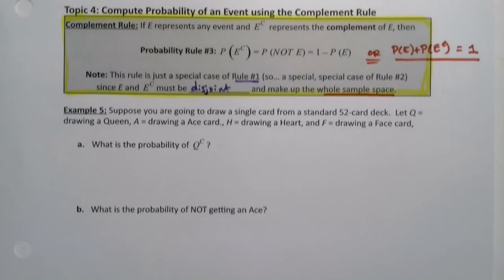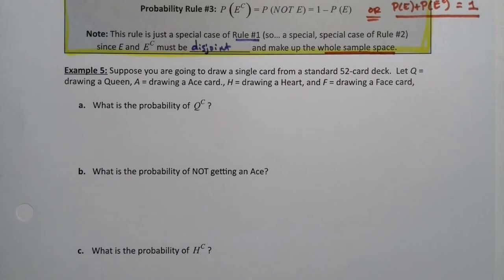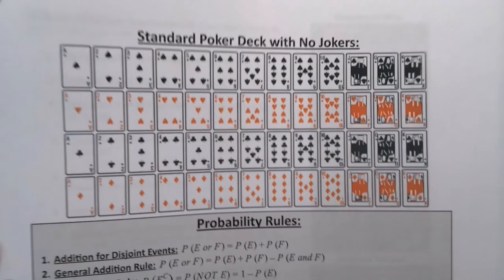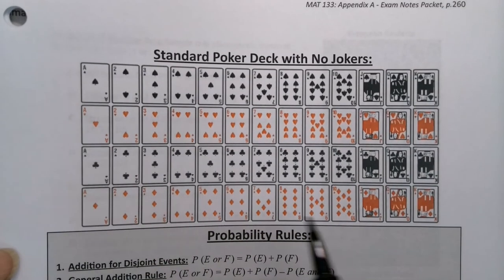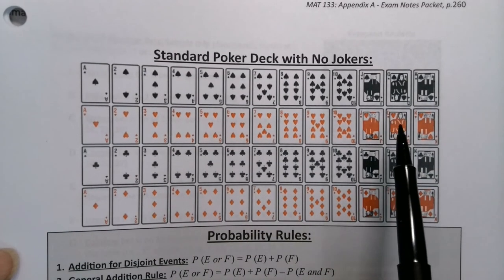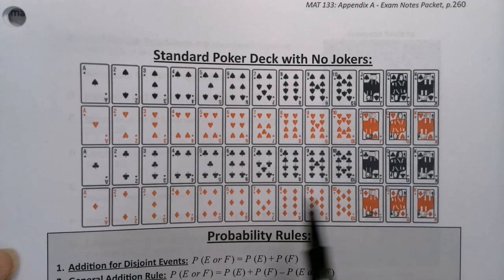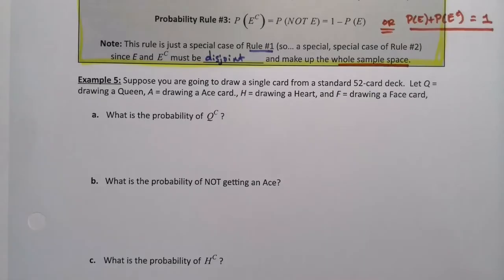All right, so now let's put it into practice. Again, we're going back to our deck of cards. I love cards. So suppose you're going to draw a single card from a standard 52-card deck. Let Q be a queen, A be an ace, H be a heart, and F be a face. This all looks familiar, okay? So again, here's our deck of cards, 52 cards total: spades, hearts, clubs, and diamonds. Never forget them, right?